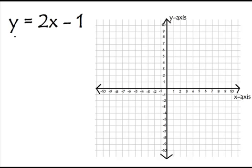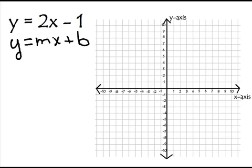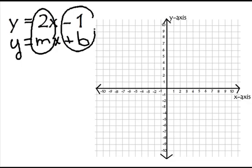Let's graph this equation y equals 2x minus 1 using the slope-intercept form. I always like to write that form underneath it — y equals mx plus b — because right away I know what my slope m is and what my y-intercept b is.